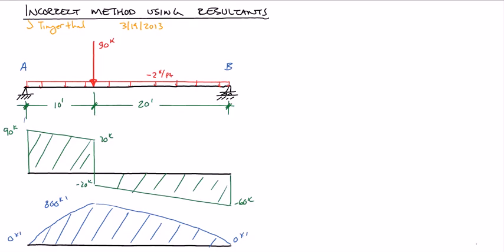And now I want to show what happens if you accidentally or incorrectly solve the Shear and Moment Diagrams using the resultants. So take a look at this. We're going to start with this one, and this is what it looks like for the real loading. And I'm going to go ahead and solve this one below using the resultant.